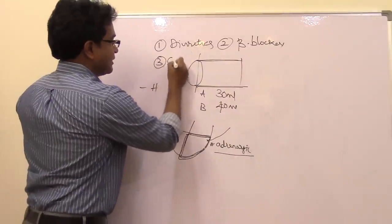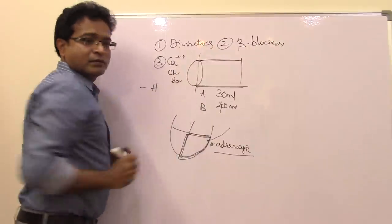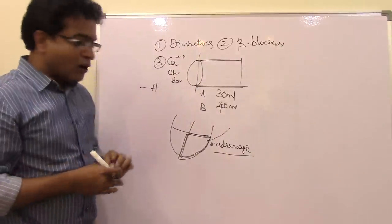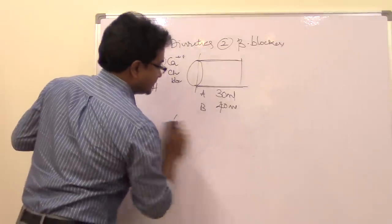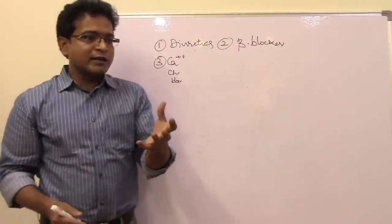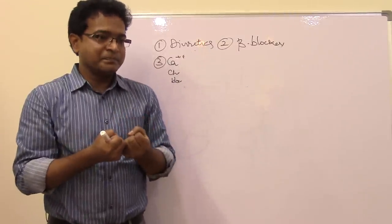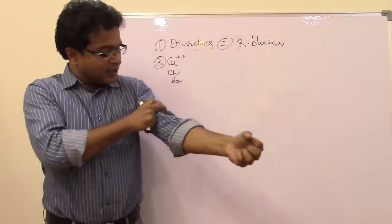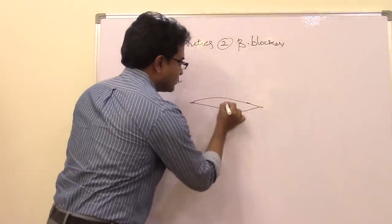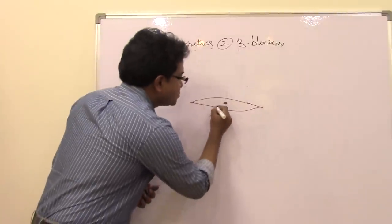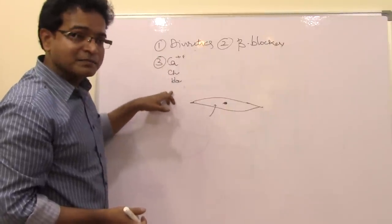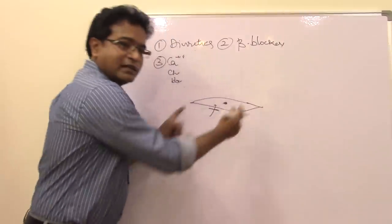Next one is calcium channel blockers. Anything like Verapamil, Nifedipine, all of them come under calcium channel blockers. We all know for muscle to contract, what do we require? We require calcium. Excess calcium leads to a condition called a stiff muscle, tetanic. If a smooth muscle needs to contract, the calcium should go inside, then only it will contract. What is this drug doing? It is blocking the calcium channels. If the calcium is not going in, the muscle cannot contract.